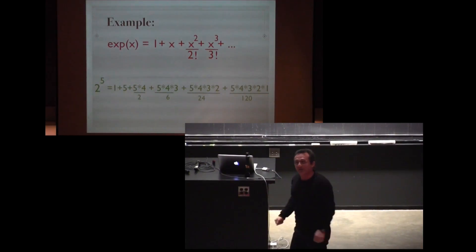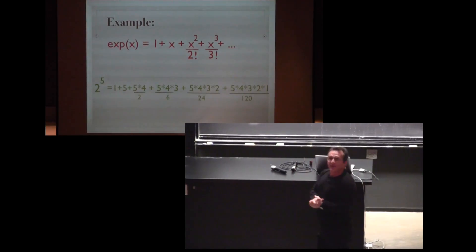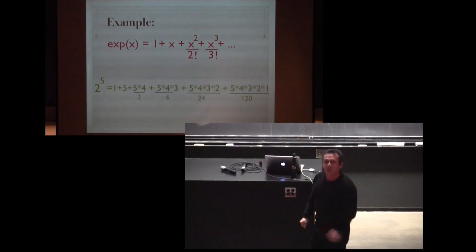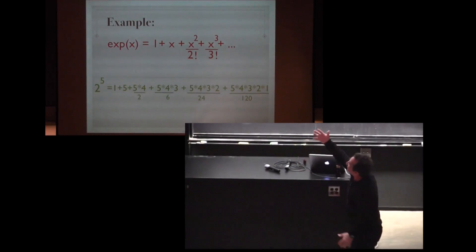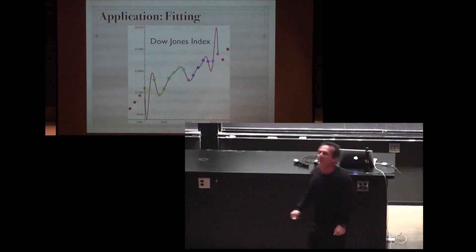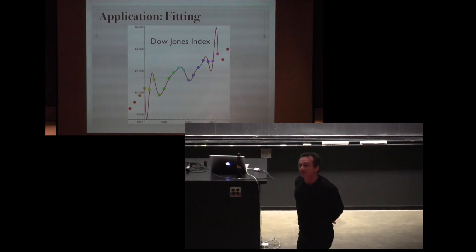You can apply it to the exponential function. You have the formula we are all familiar with. Of course these are the deformed functions. And here is an example. Arithmetic result. 32 is 1 plus 5 plus 5 times 4 over 2 et cetera. That's the Taylor series expansion.